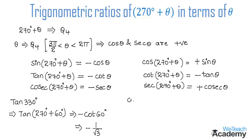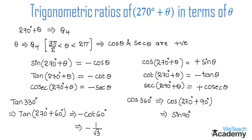Now find the value of cos 360 degrees. We write cos 360 as cos(270° + 90°). Using the formula cos(270° + θ) = sin θ, we get sin 90 degrees. Since sin 90 equals 1, therefore the value of cos 360 degrees is 1.